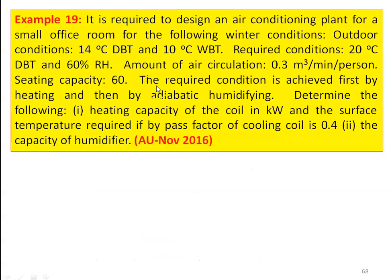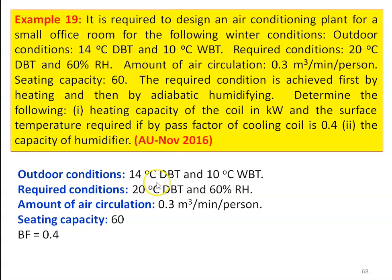Example number 19: It is required to design an air conditioning plant for a small office room for the following winter conditions. Outdoor condition: 14 degree Celsius dry bulb temperature, 10 degree Celsius wet bulb temperature. Required conditions: 20 degree Celsius dry bulb temperature and 60 percent relative humidity. The amount of air circulation is 0.3 meter cube per minute per person, seating capacity is 60. The required condition is achieved first by heating and then by adiabatic humidifying. Determine the heating capacity of the coil in kilowatt and the surface temperature required if the bypass factor is 0.4, and the capacity of the humidifier. This question is from November 2016.